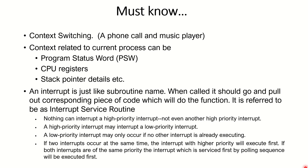What happens classically when an interrupt occurs? It's called context switching. I'm playing a game on my phone and somebody calls me. The call appears as the highest priority — I attend the call, and once the conversation is over, I get back to the same thing I was doing before. This is context switching: the context switches from the game to the phone call and back again.